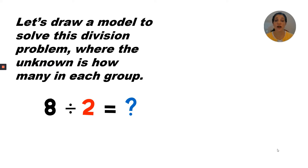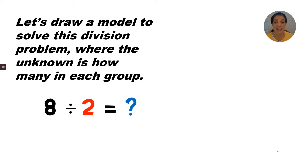Let's draw a model to solve this division problem where the unknown is how many in each group. The first number is always the biggest number in the division equation — this is called a dividend. The dividend is 8, so we are dividing 8 into smaller groups. The second number, 2, is the divisor — it's how many groups. The final number after the equal sign is called the quotient, and the unknown in this equation is the quotient. We want to know how many in each group.